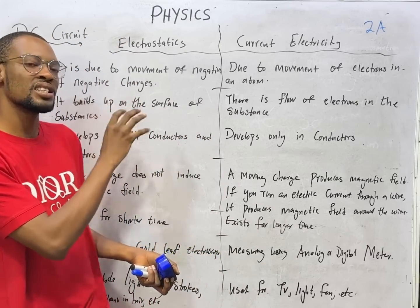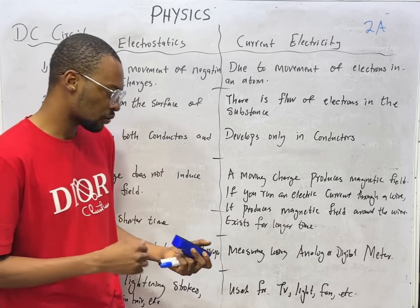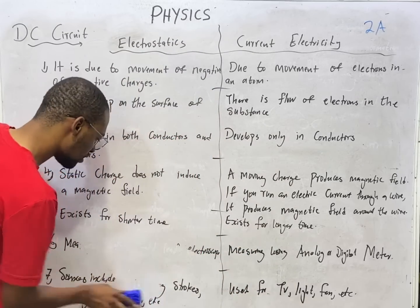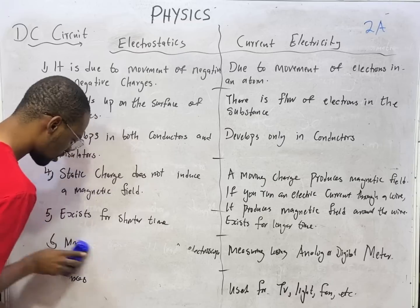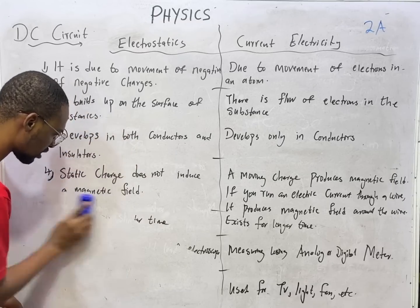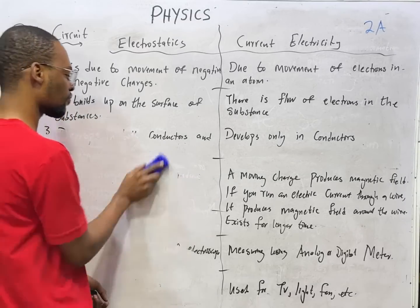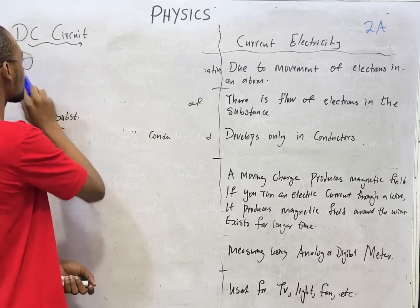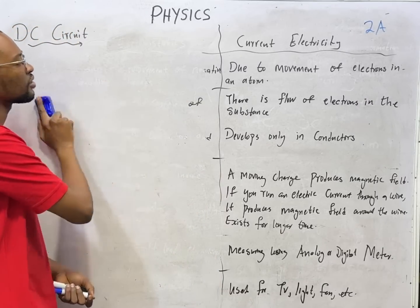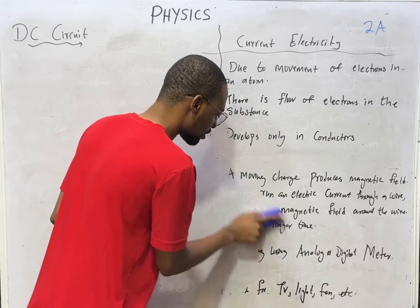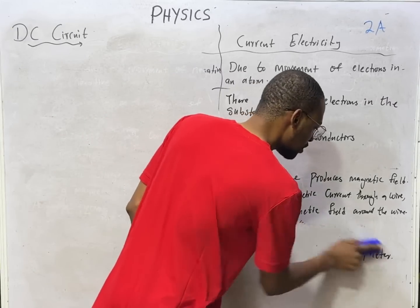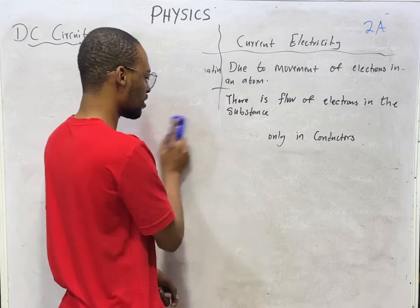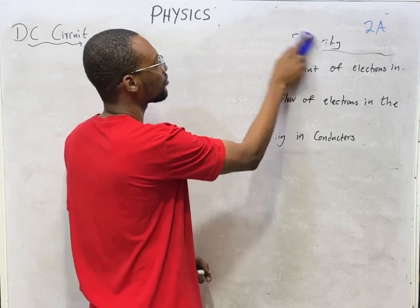Static electricity cannot power those appliances. Now, current electricity can be DC or AC. In this class we are introducing DC circuits. Direct current flows only in one direction and has positive and negative terminals.